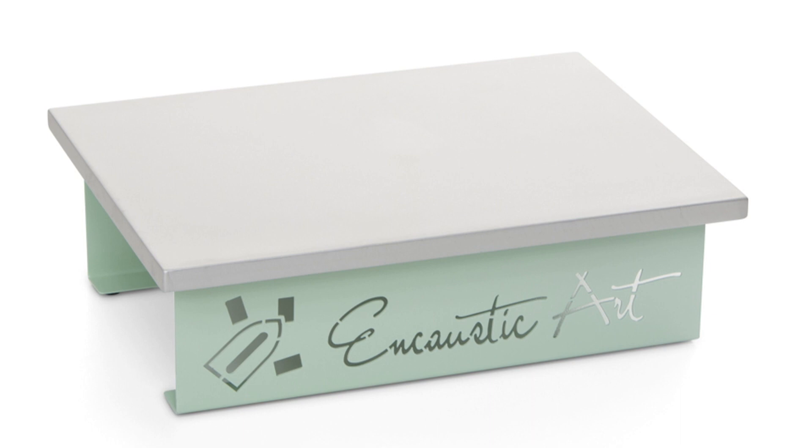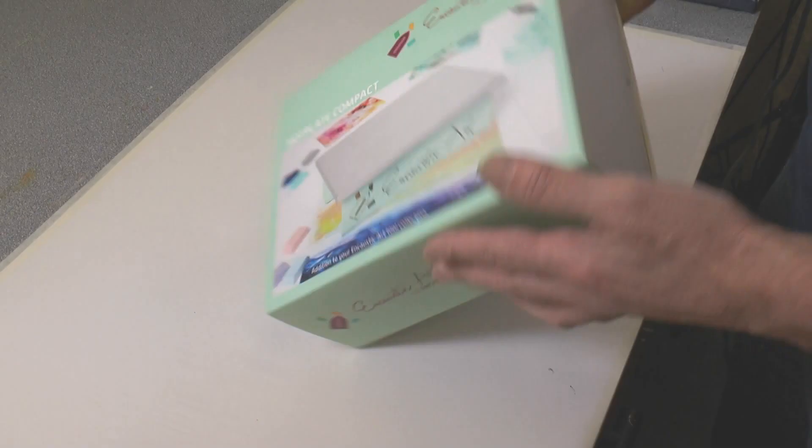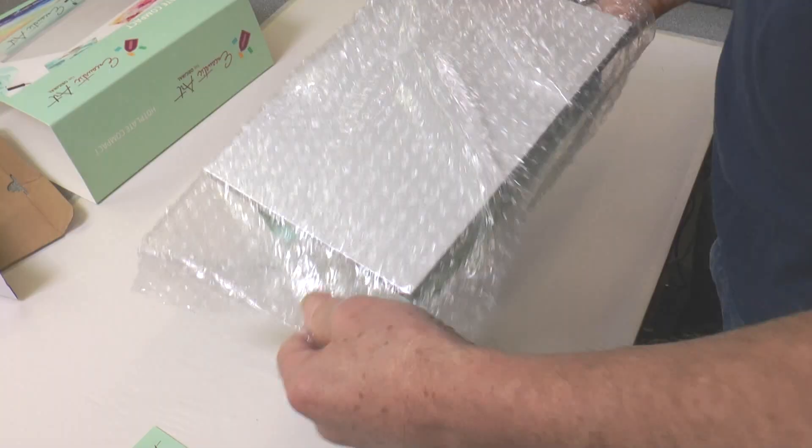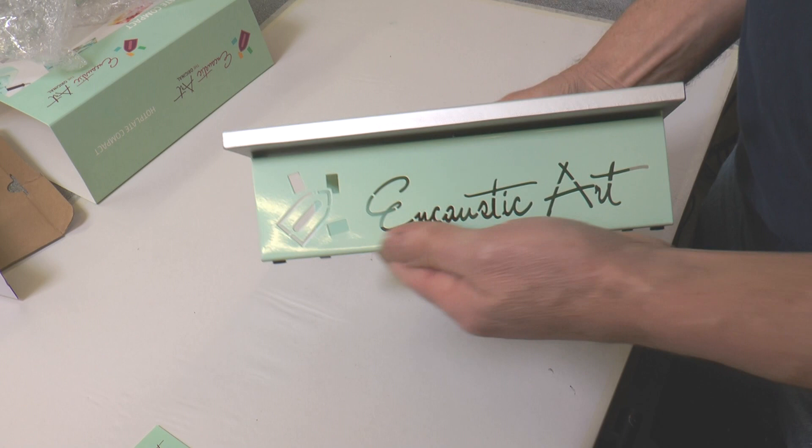The Encaustic Art Compact Hotplate is powered by the painting iron. It comes in a nice box and inside that box you'll find the fretwork stand fixed to the anodized aluminium hotplate top.